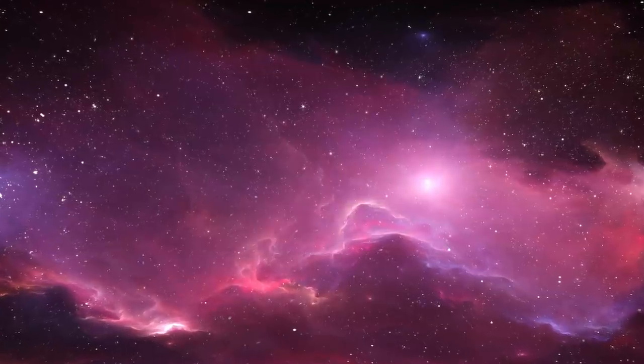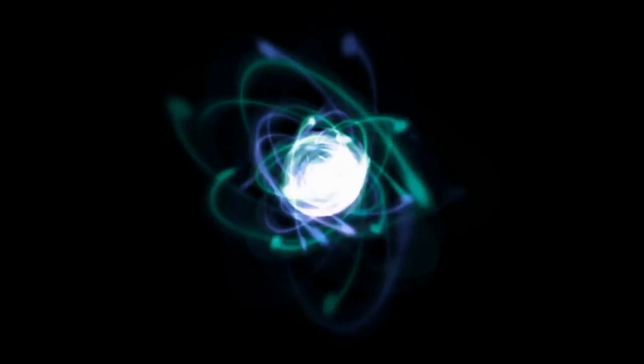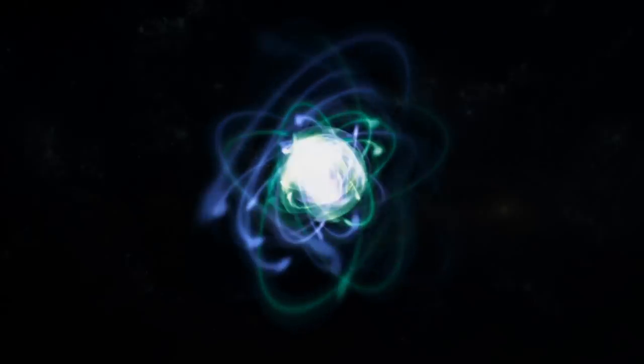For some reason that we don't understand at all, nature saw fit to make two carbon copies of those, as it were. These are identical in every way to those four particles except they're heavier. So this thing is called a muon - it's the same as an electron in every way except it's heavier. This is the tau - same as the electron and the muon in every way except they're heavier.